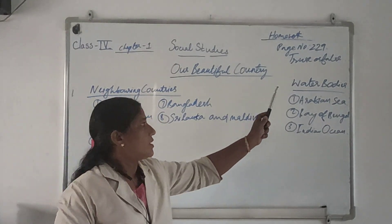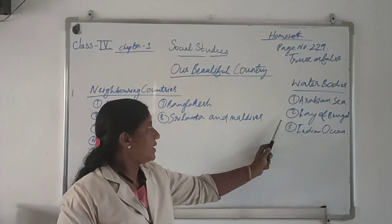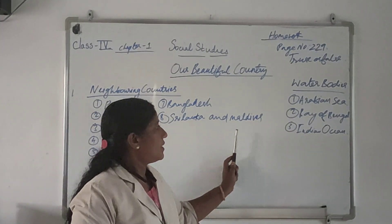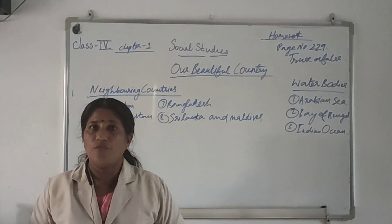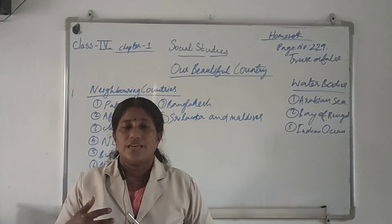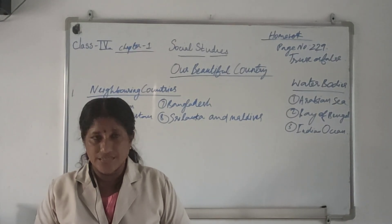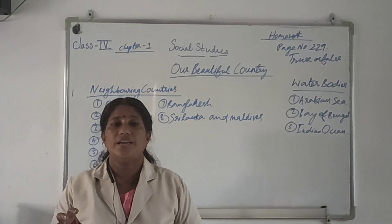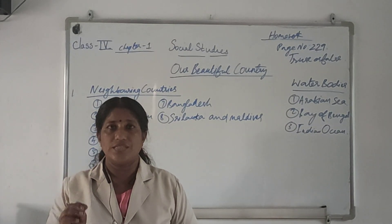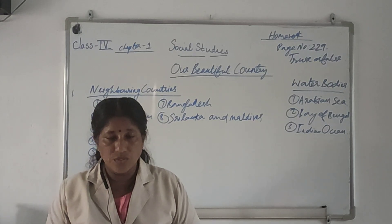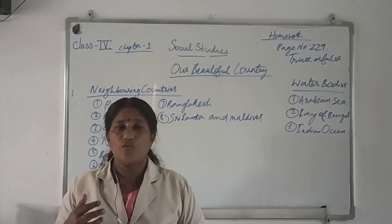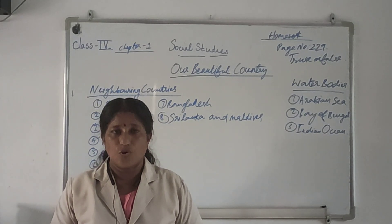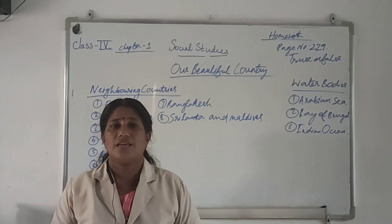So we discussed the water bodies, then neighboring countries, then India has different states. India has 28 states, and these 28 states speak different languages, wear different clothes, have different food habits and different customs.